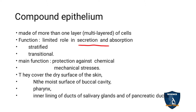The function of compound epithelial tissue is limited compared to simple epithelial tissue — secretion and absorption are limited here. It is of two types: stratified and transitional compound epithelium. The main function of compound epithelium is protection against chemicals and mechanical stress, providing protection to the underlying tissues.